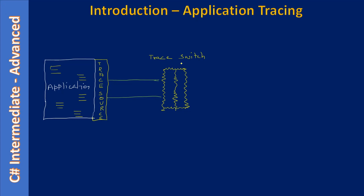The next component is a trace switch. This trace switch is attached to the application, and the trace source sends tracing information via this trace switch. The trace switch acts as a filter — we can call this a source filter. Messages that pass through this source filter get filtered, and fewer messages come out. For example, if we get 100 messages in, based on the filter, maybe 25 messages come out.